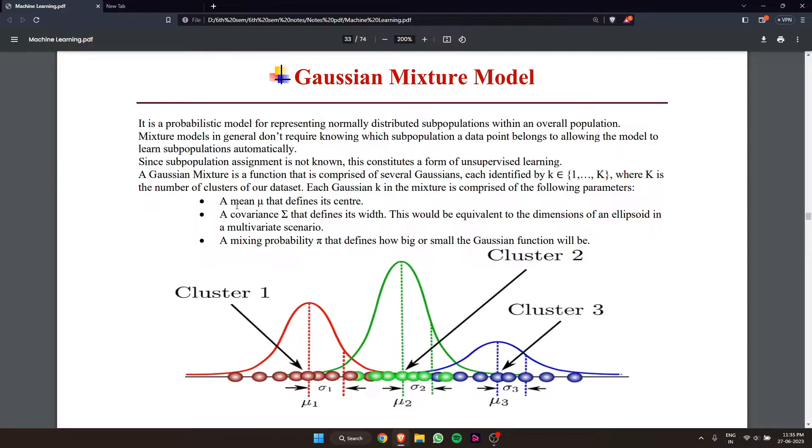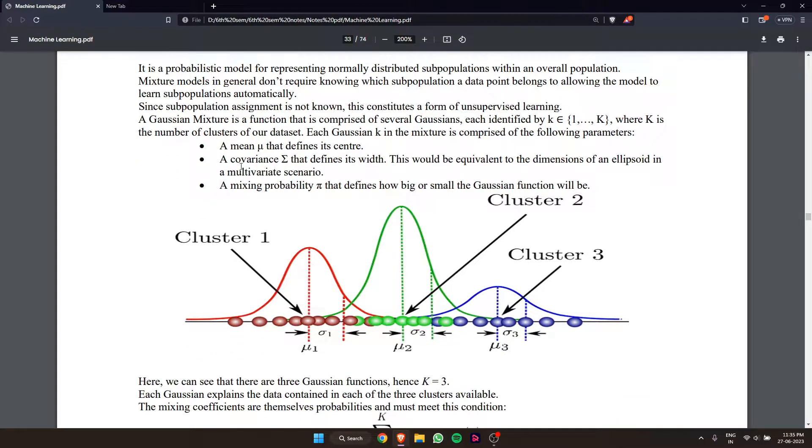A mean mu that defines its center, a covariance that defines its width (equivalent to the dimension of an ellipsoid in a multivariate scenario), and a mixing probability phi that defines how big or small the Gaussian function will be.